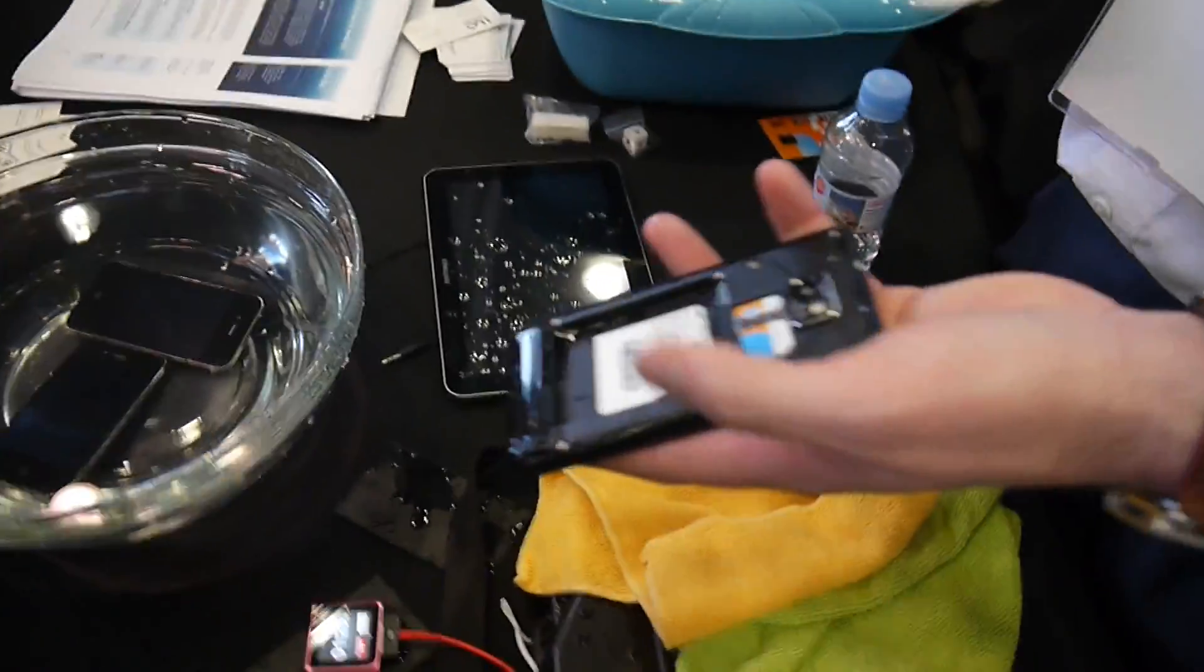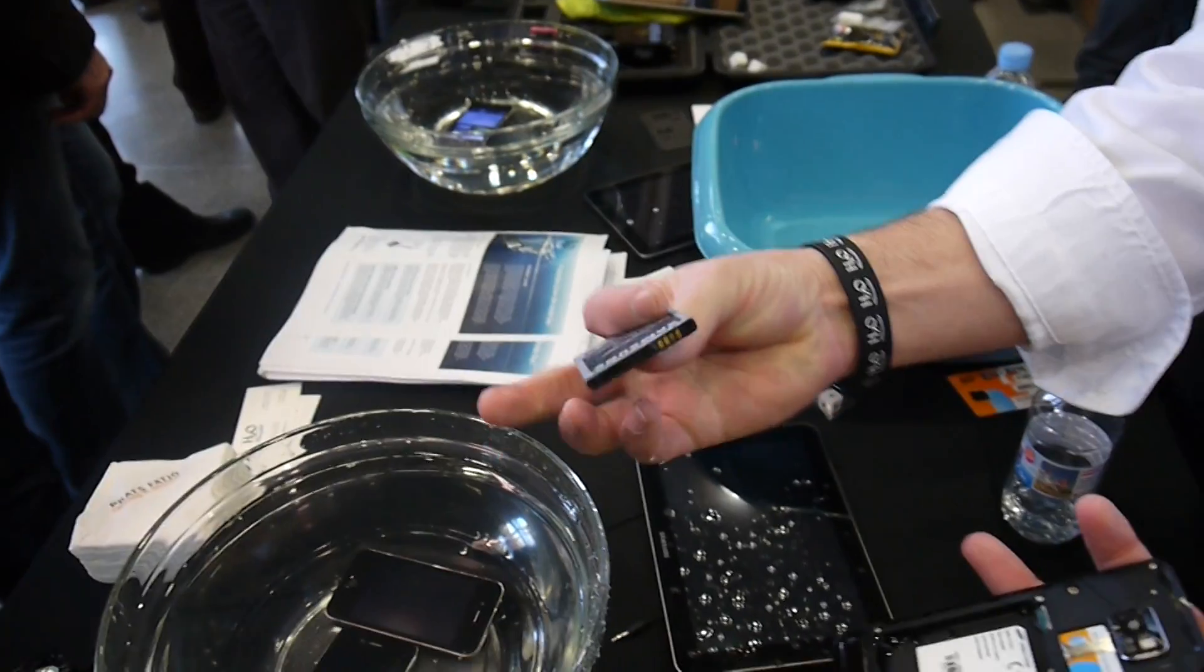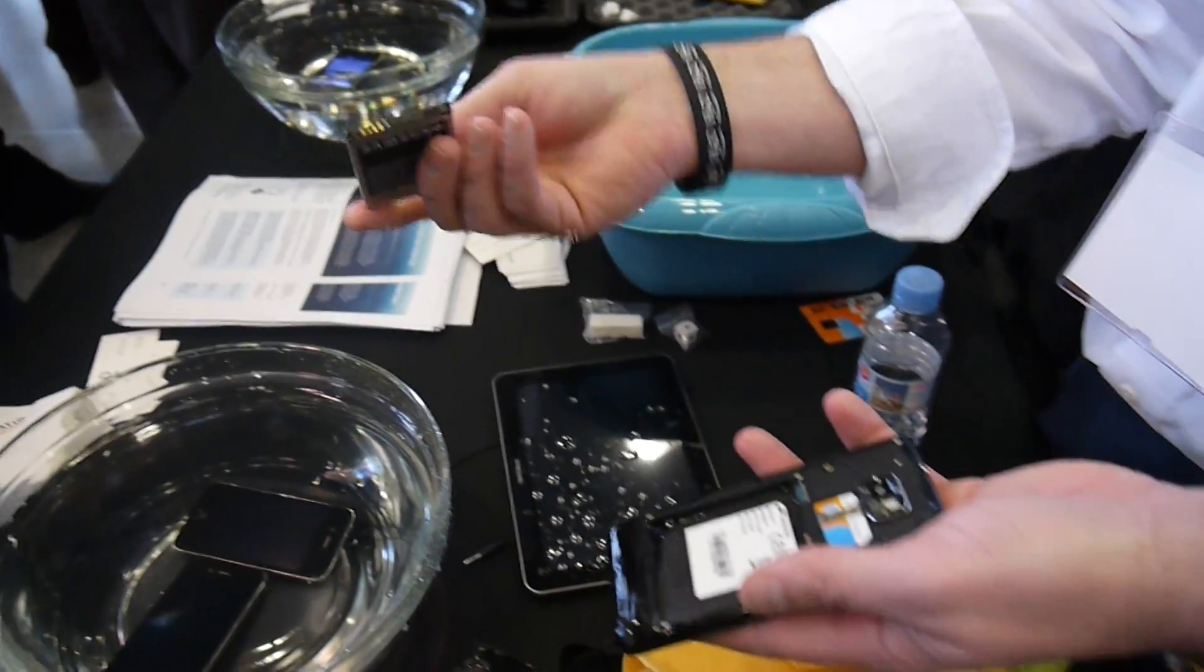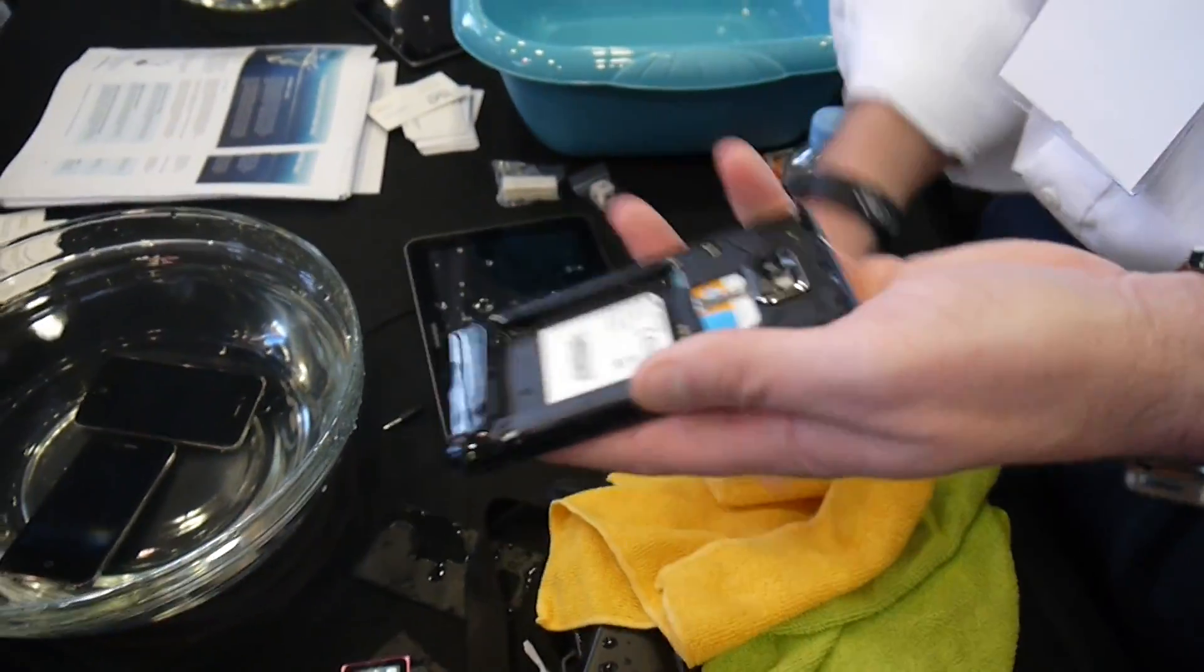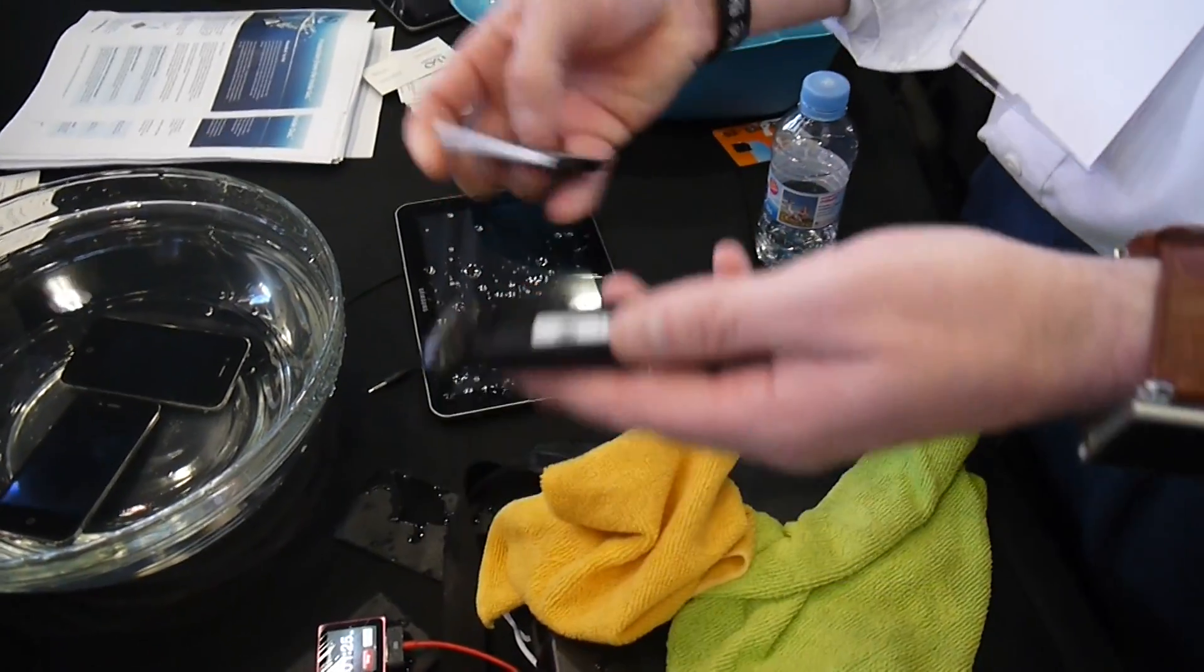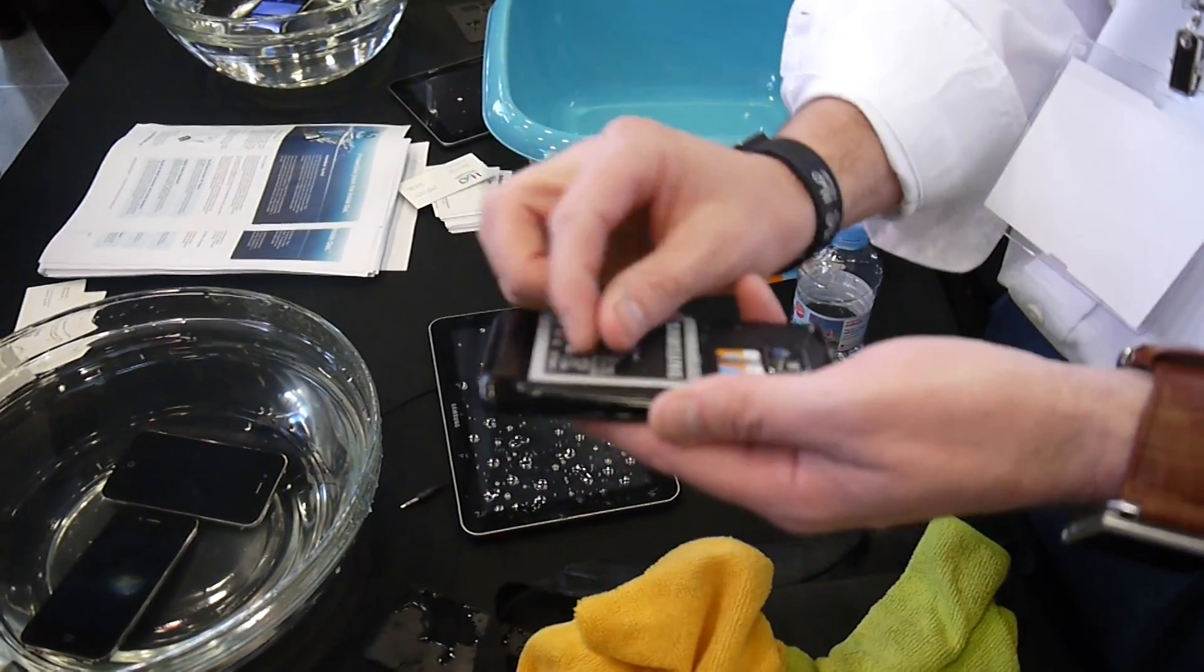There's actually chips inside of batteries too. So we have to apply the coating to the batteries as well, otherwise the battery would fail when it's submerged. So that's also part of the problem.